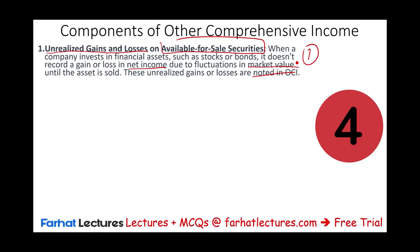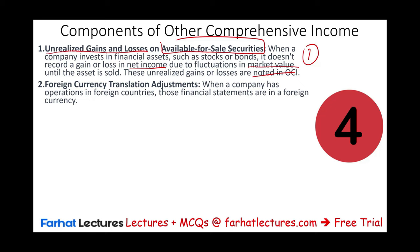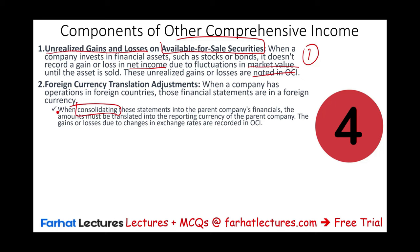Another item is foreign currency translation adjustment. When a company has operating divisions in foreign countries, those statements are in foreign currencies when initially generated. But when they are consolidated and combined with the U.S. entity, the amounts must be translated into U.S. dollars. Because we are translating a foreign currency to U.S. dollars, we might have an exchange gain or a loss, and those are recorded in OCI.